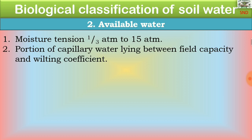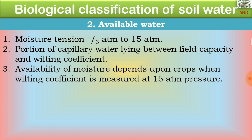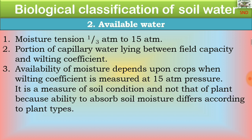The second type is available water, with moisture tension from one-third atmosphere to 15 atmospheres. It is the portion of capillary water lying between field capacity and the wilting coefficient. Availability of moisture depends upon crops. When the wilting coefficient is measured at 15 atmospheres pressure, it is a measure of soil condition and not of the plant, because the ability of plants to absorb soil moisture differs according to their types.